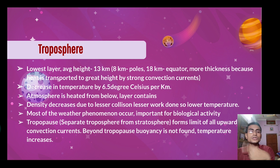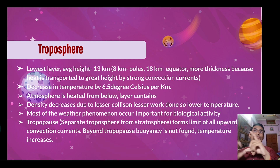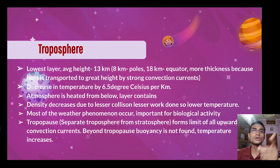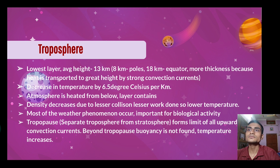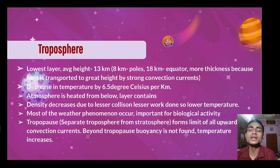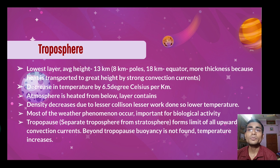Because Earth is a geoid shape, the troposphere thickness varies — it is about 8 km at the poles and 18 km at the equator. The greater thickness at the equator is because heat is transported to great height by strong convection currents.